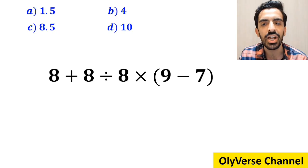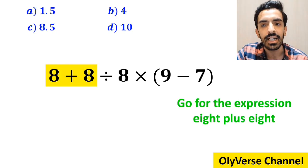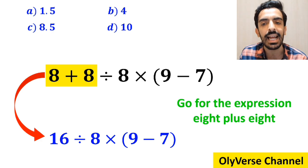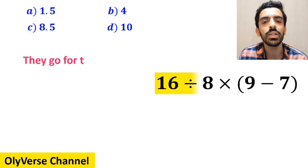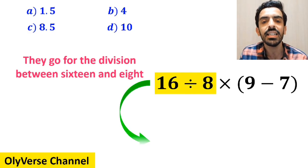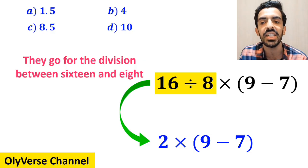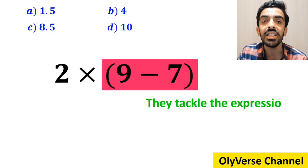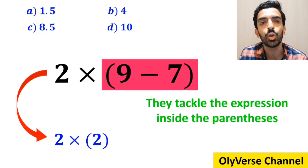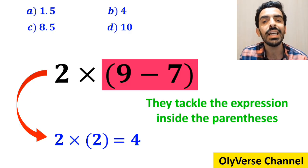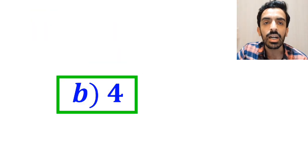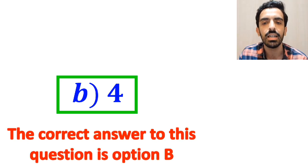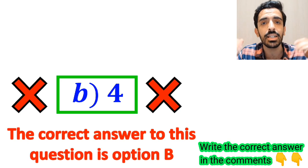Many people first go for the expression 8 plus 8 and rewrite it as 16 divided by 8 then times 9 minus 7 inside parenthesis. In the next step they divide 16 by 8 to get 2, multiplied by 9 minus 7 inside parenthesis. Finally they tackle the parenthesis and get 2 times 2, which gives them 4 — and they quickly say the correct answer is option B. However, it's not the correct answer.